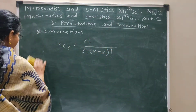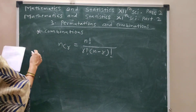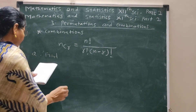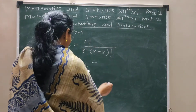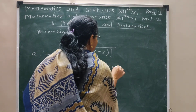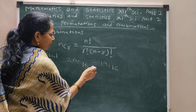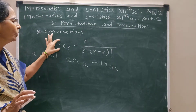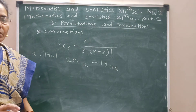Next is a practice question for you to solve. Find 20C16 minus 19C16. Find the value of each term according to the combination formula, take their difference, and see what the answer is.